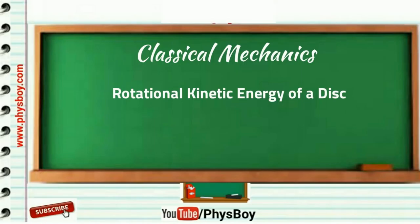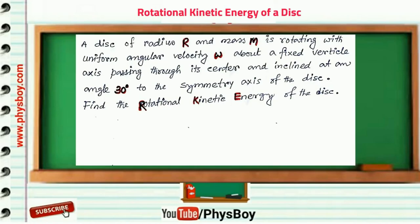The problem was: a disk of radius R and mass M is rotating with uniform angular velocity omega about a fixed vertical axis passing through its center and inclined at an angle 30 degrees to the symmetry axis of the disk.